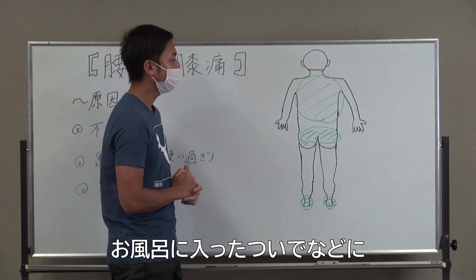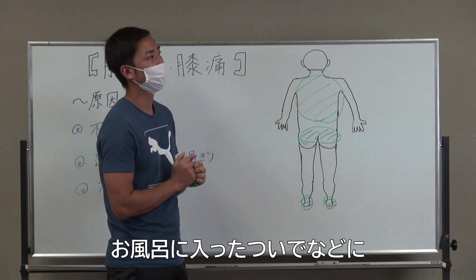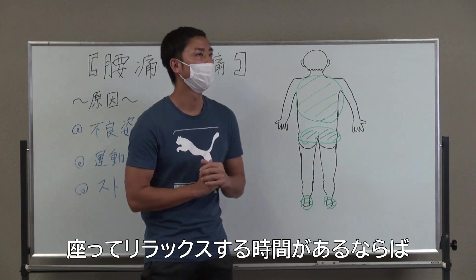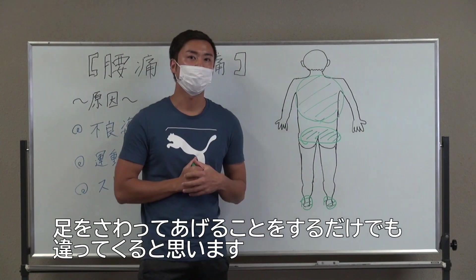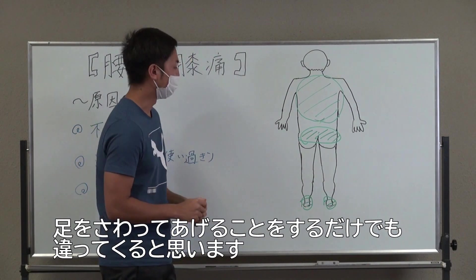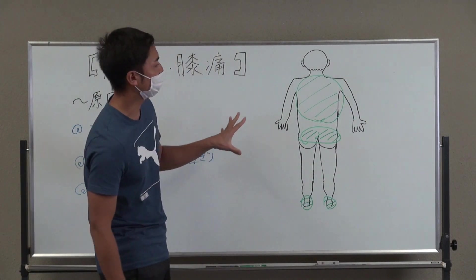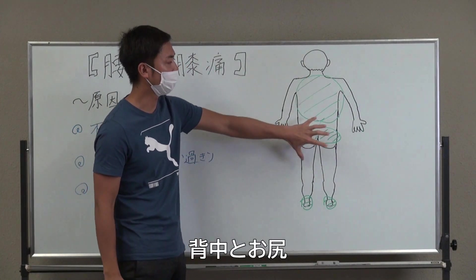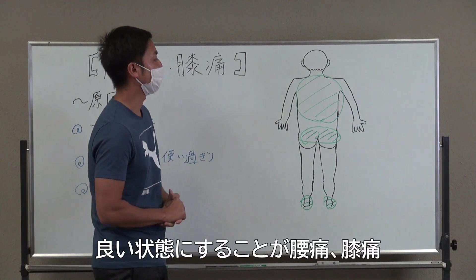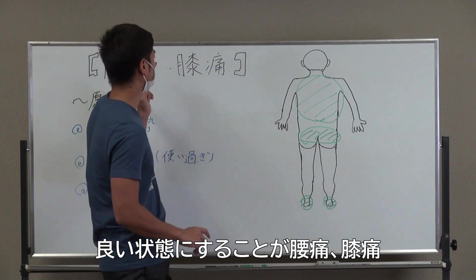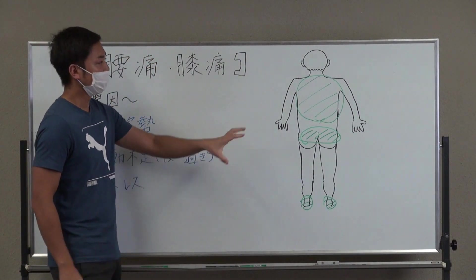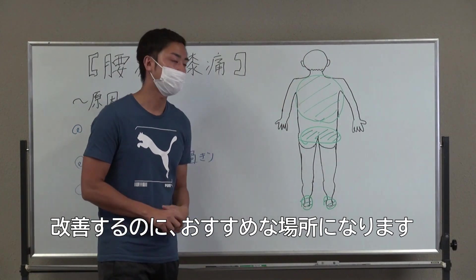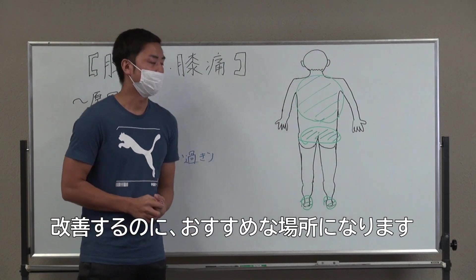ちょっと余談ですが、足首や足の関節、足の裏のかかとの位置がずれるだけでも膝の位置は結構ねじれたりずれたりするんですね。足の関節が正しい位置にないと膝がねじれた状態になったままになるので、膝の痛みがなかなか取れなかったりもします。なので足裏のマッサージだったり指をほぐすとか、お風呂に入ったついでや少し座ってリラックスする時間があるときにちょっと触ってあげるだけでもだいぶ違うかなと思います。この背中とお尻の筋肉をいい状態にしようというところが、腰痛と膝痛改善の一番おすすめの方法になります。